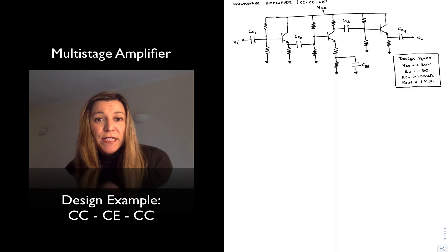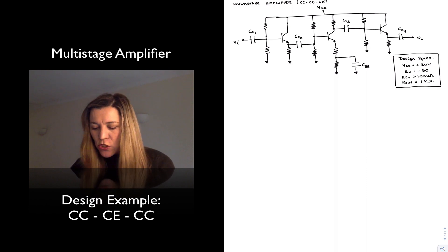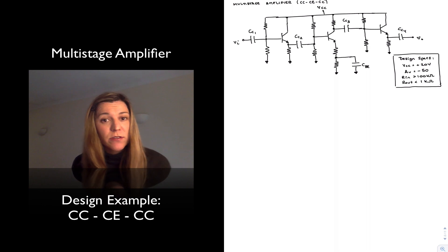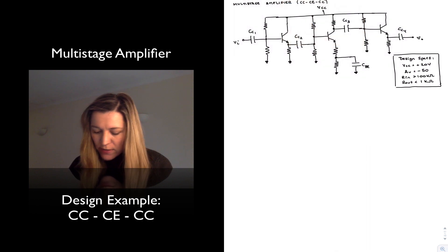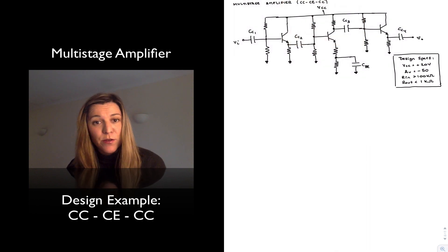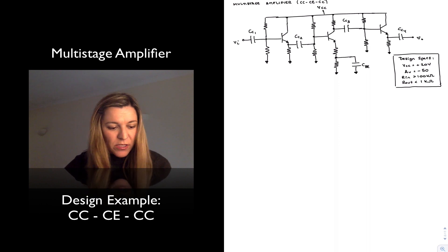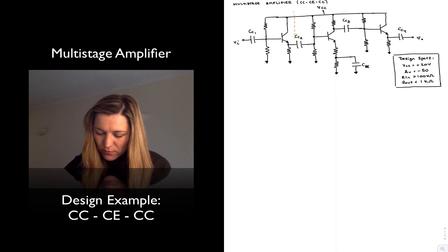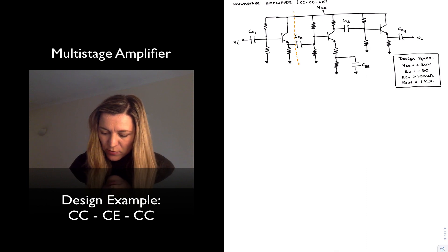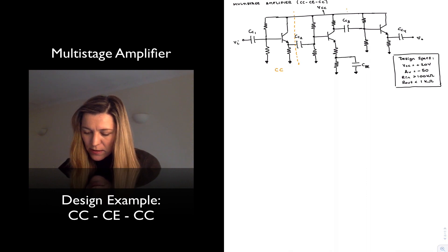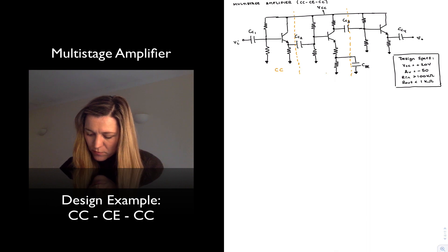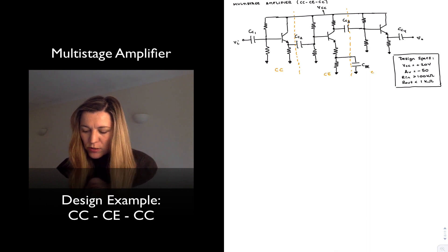We're going to implement a multi-stage amplifier at the transistor level. I have drawn the three stages we have studied: common collector, common emitter, common collector. The input signal is fed through a coupling capacitor into the first stage, which is a common collector amplifier or emitter follower. It's followed by a common emitter stage and then another common collector stage at the output.